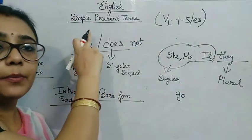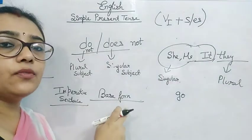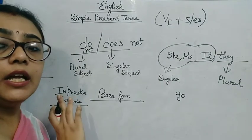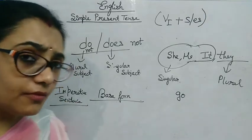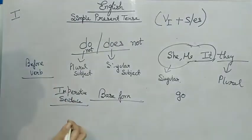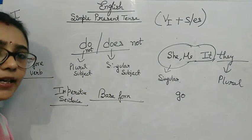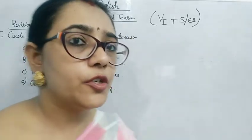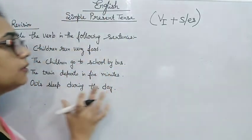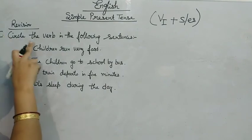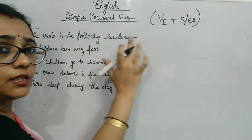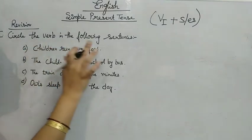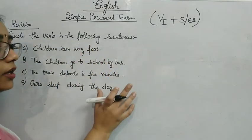That means in simple present tense, the base form of the verb will not change in the case of imperative sentences. Now let's discuss some examples for revision. See the board — the exercise is to circle the verb in the following sentences. All the sentences are in simple present tense.